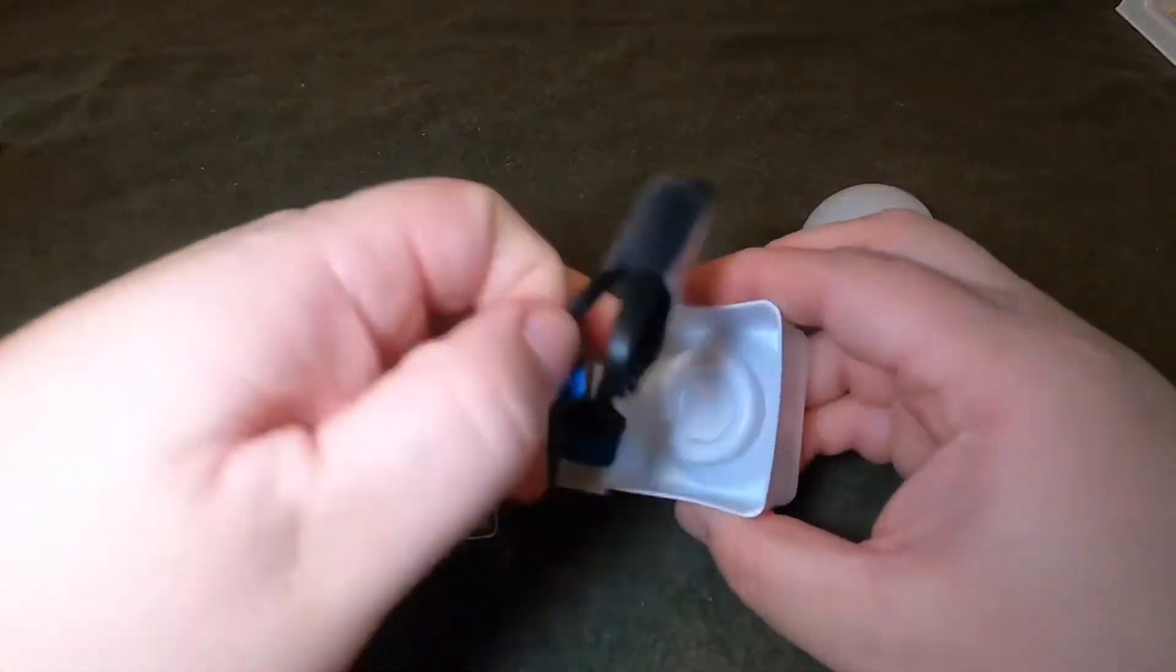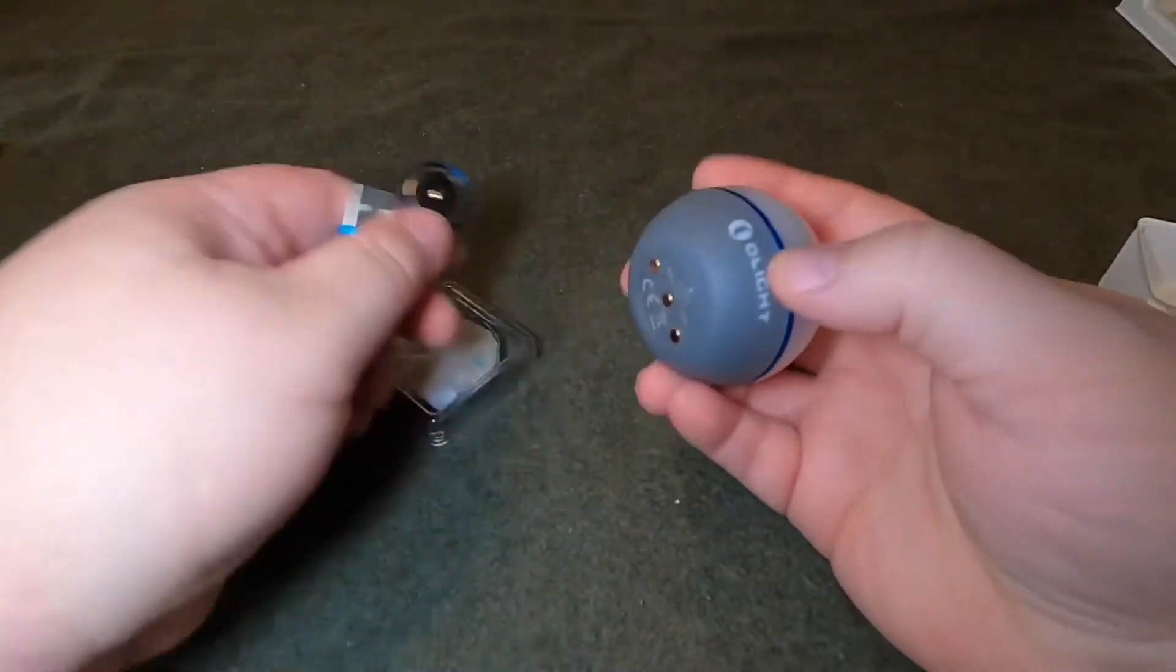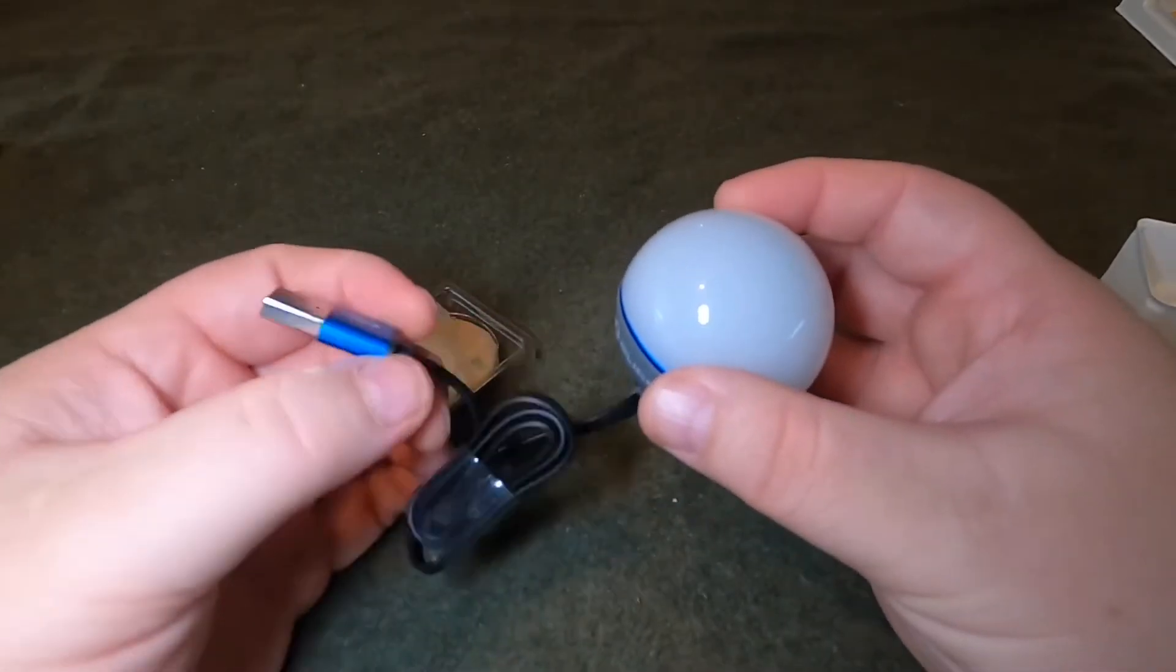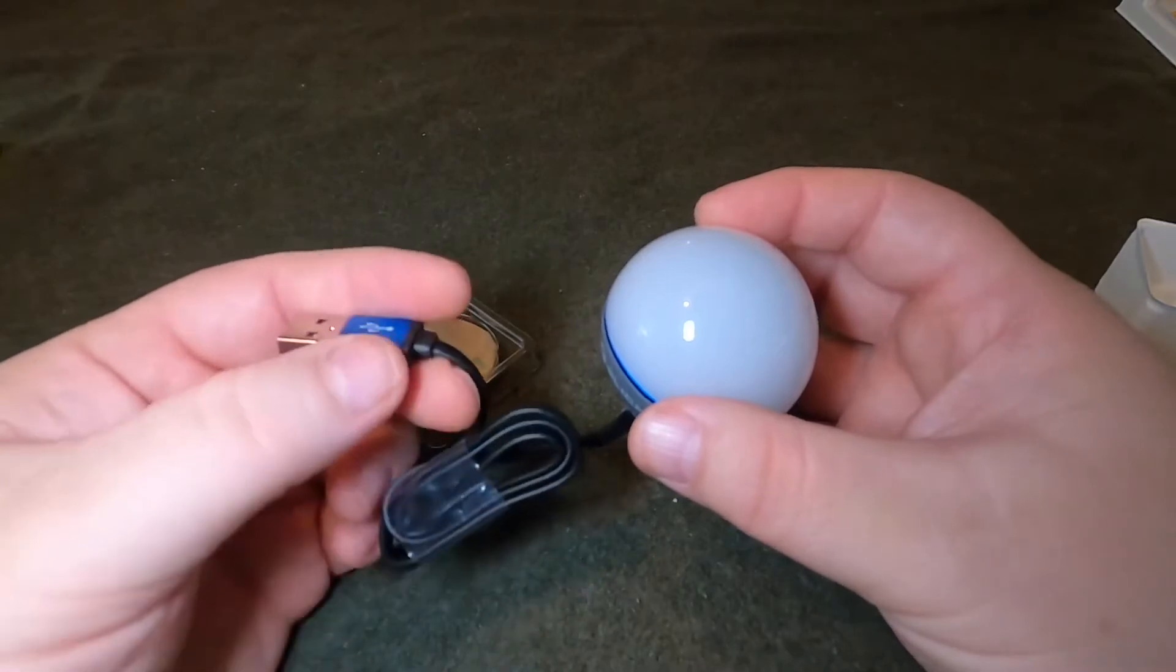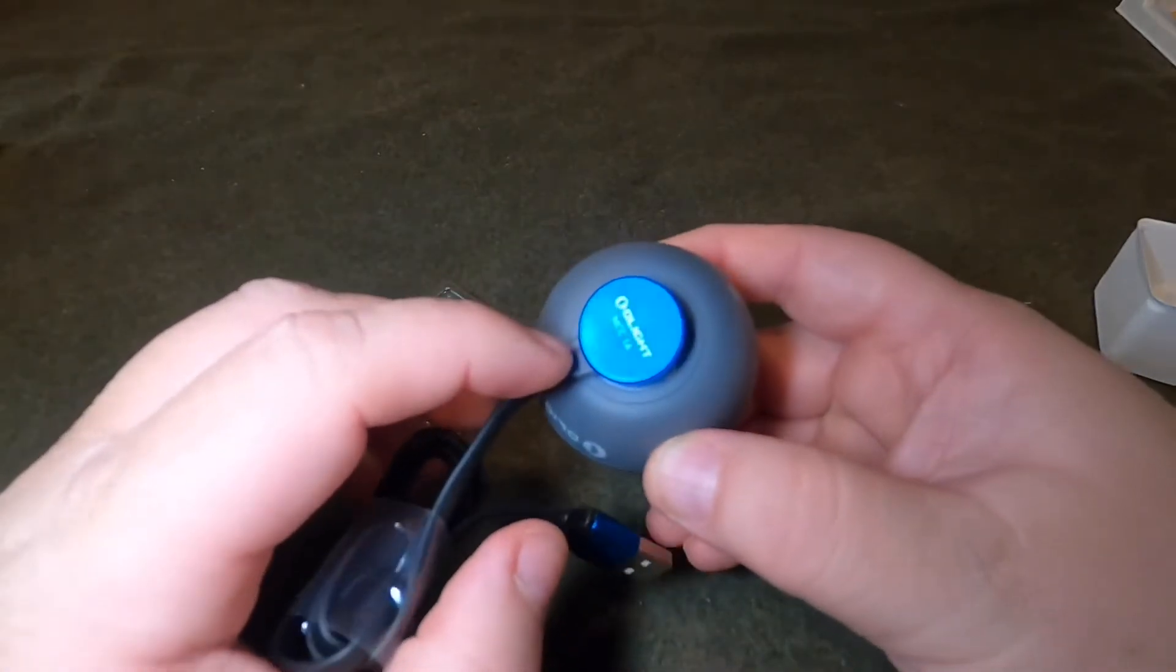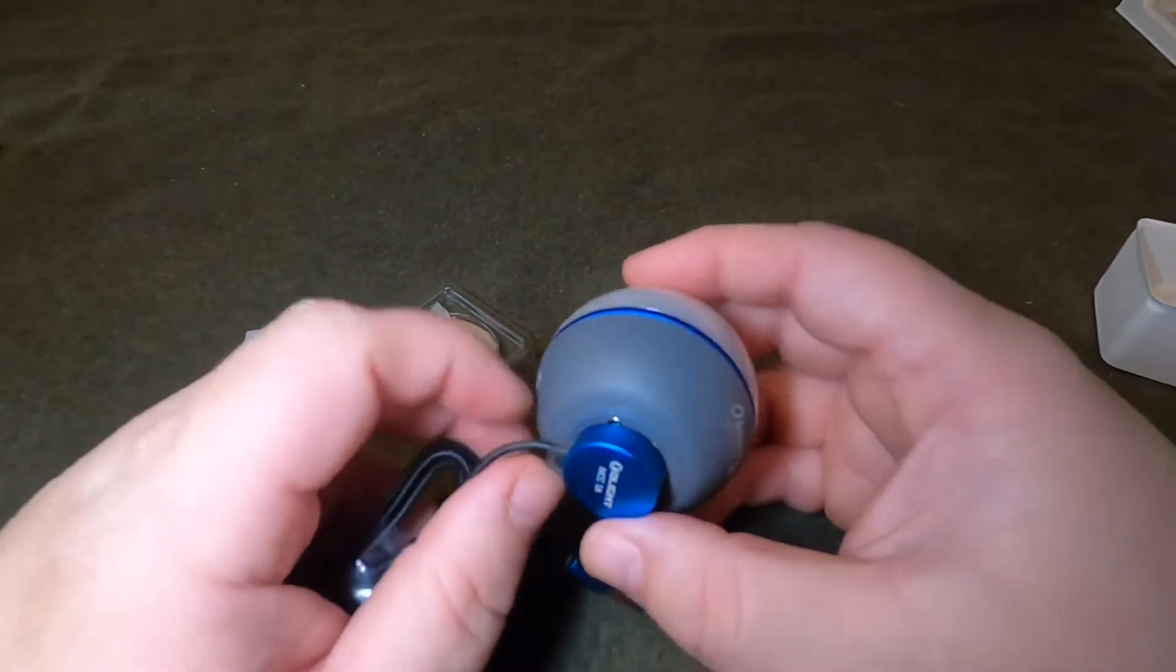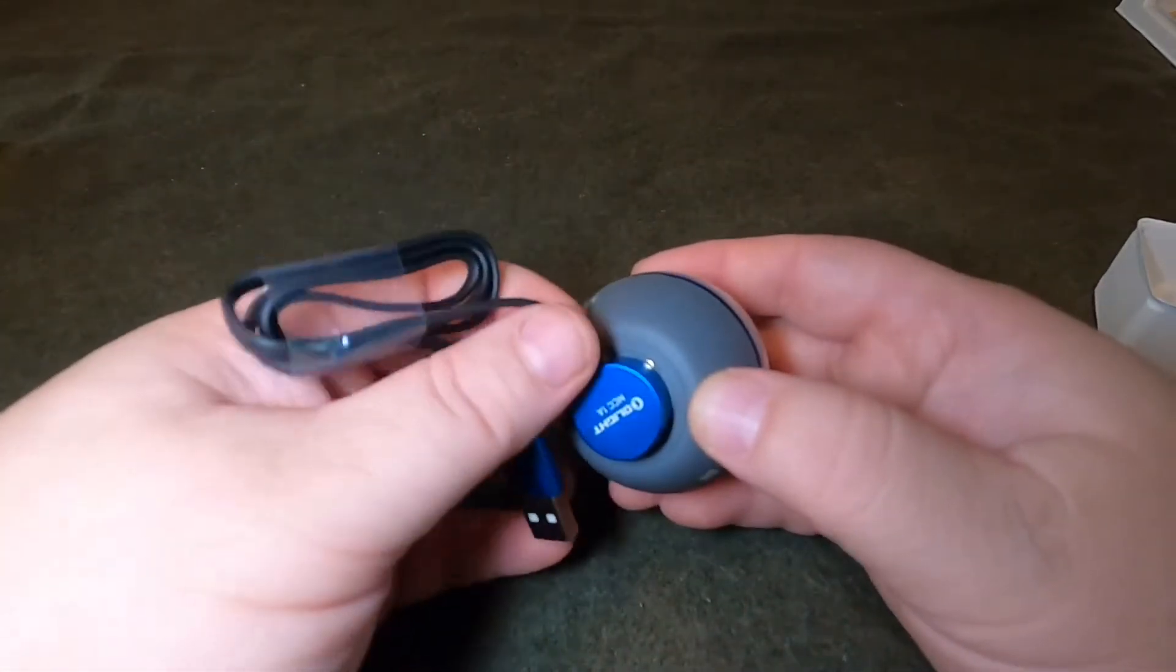And the charger, which is a magnetic USB charger, and it just sticks to the bottom there. And you plug this into your USB charge block or laptop or whatever. And this area will light up red if the O-Bulb is in need of a charge and will turn green once it is fully charged. Pretty neat little system. I love these magnetic chargers.